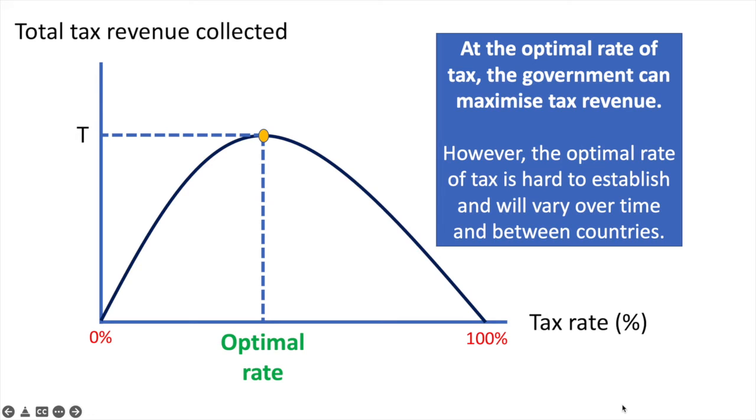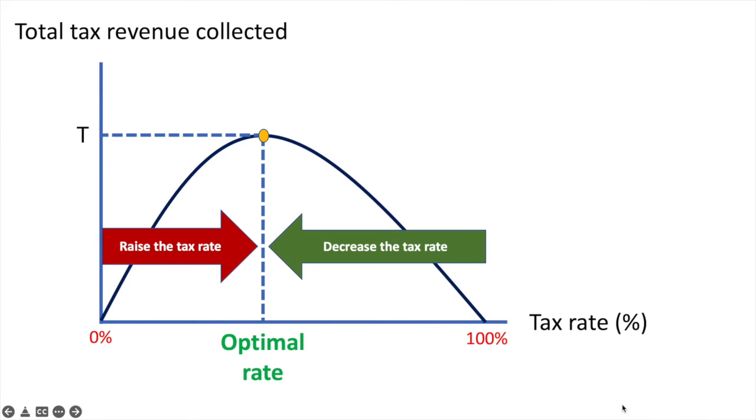While in this image it looks like the optimal rate should be around 50%, the curve can take many different shapes and portions as well. The ultimate lesson from the Laffer Curve is that there is an argument to raise or decrease the tax rate once we understand what the optimal rate of tax is.